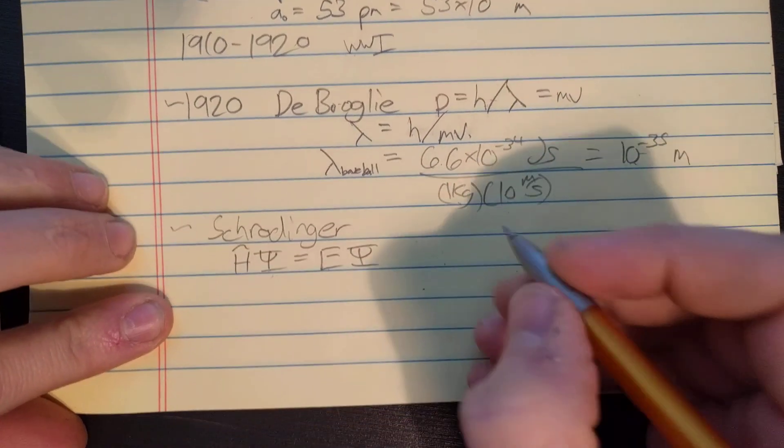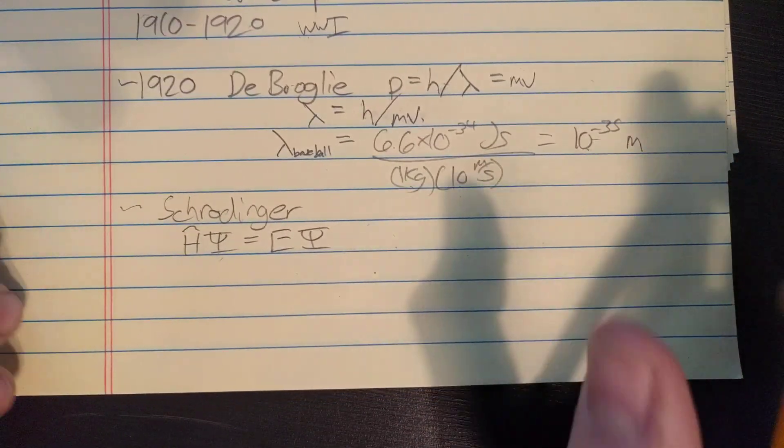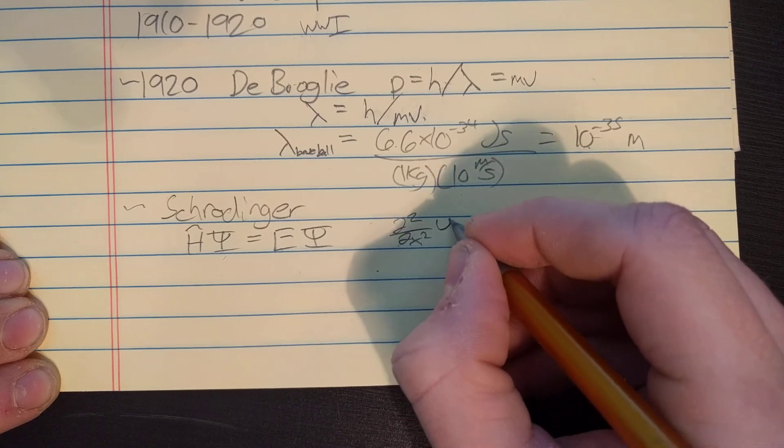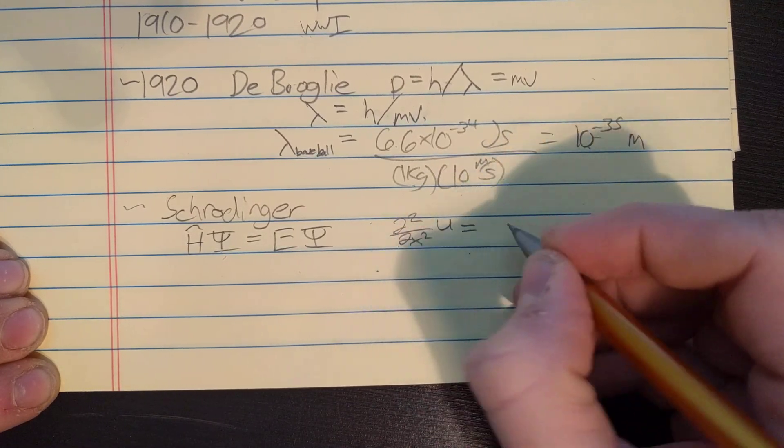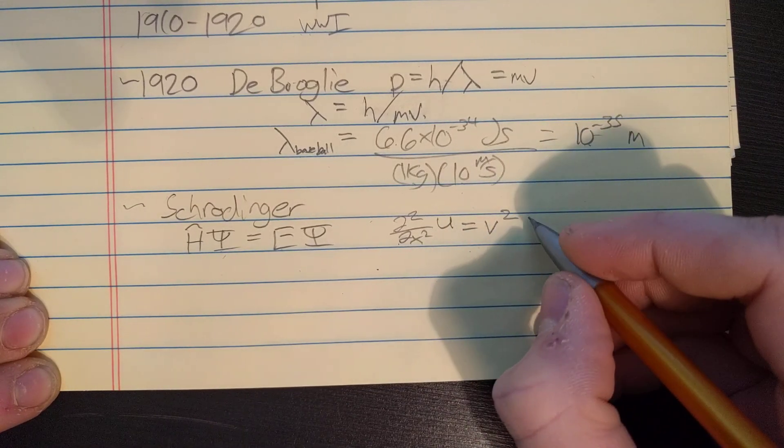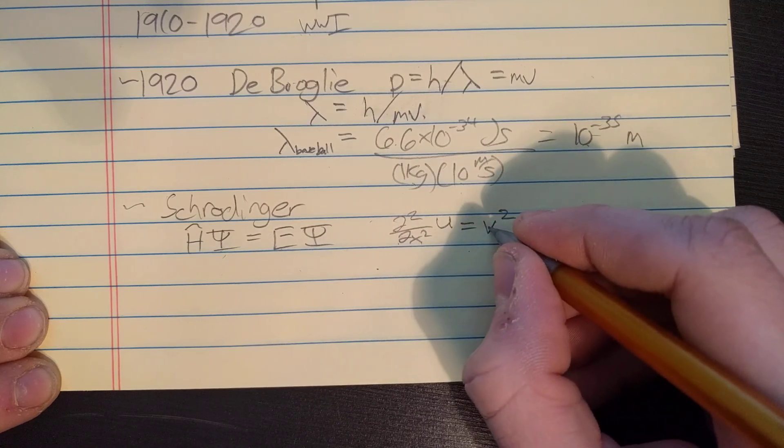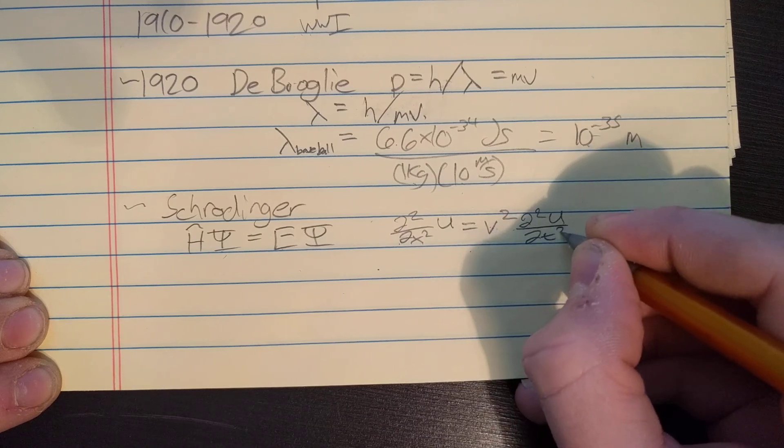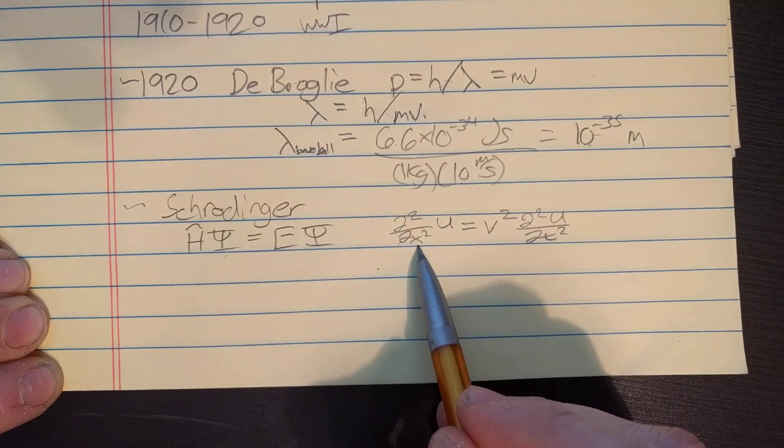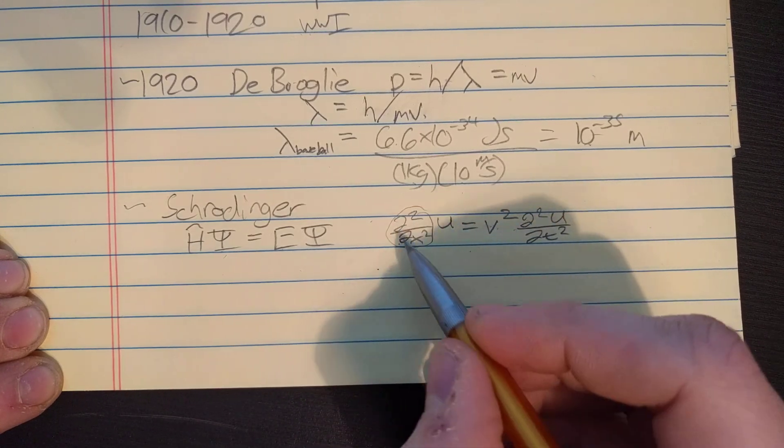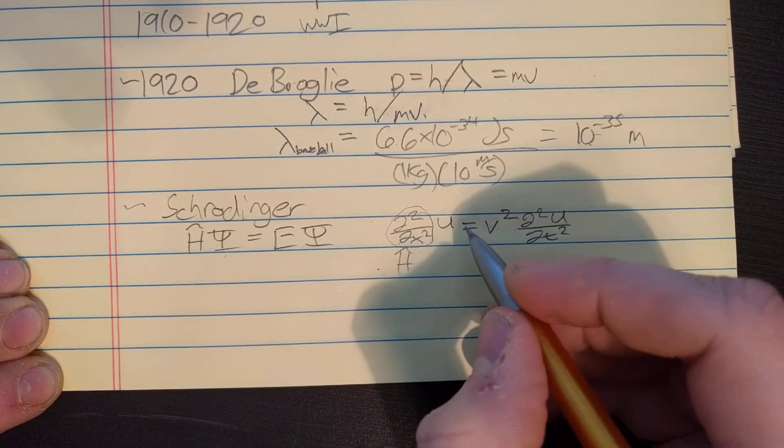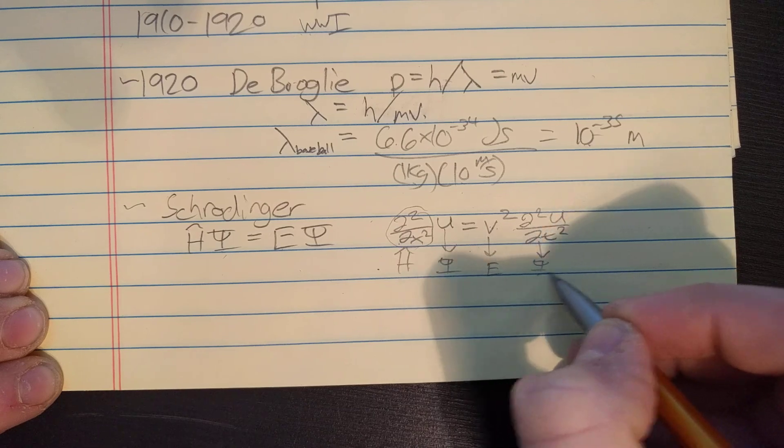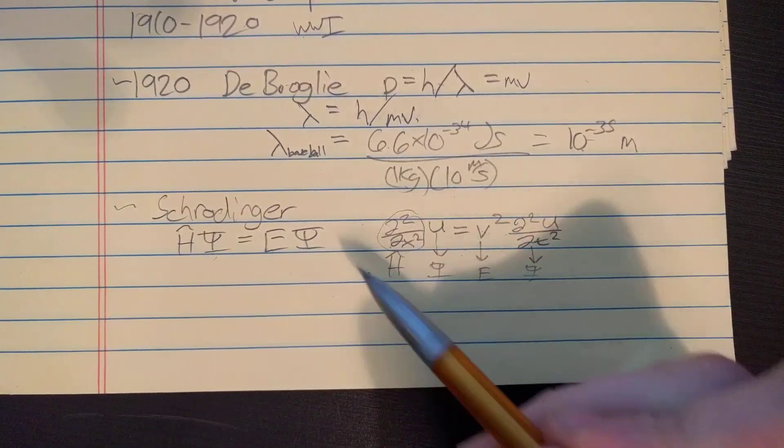I'm guessing where he got this from was there is this equation in classical mechanics called the wave equation, which said that the double derivative of something in a particular direction, say the x direction, and we'll say our function is u, is equal to the velocity of that thing squared, the velocity of the wave squared, is equal to the double time derivative of that thing. We can see the similarity between these. This part here corresponds to the Hamiltonian, this h with a little hat on it, this part corresponds to psi, this part corresponds to the energy, and this part also corresponds to psi. It just has similarities, they're not exactly the same.